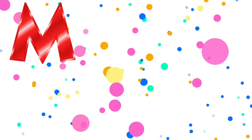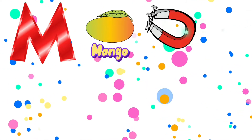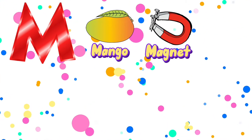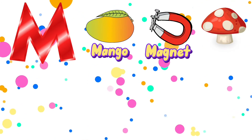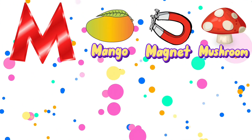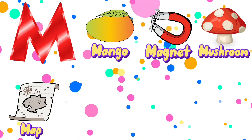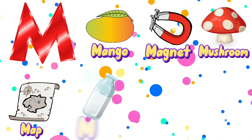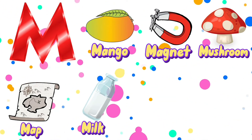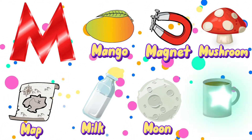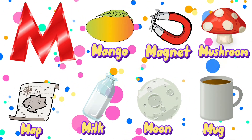M is for mango, magnet, mushroom, map, milk, moon, mug.